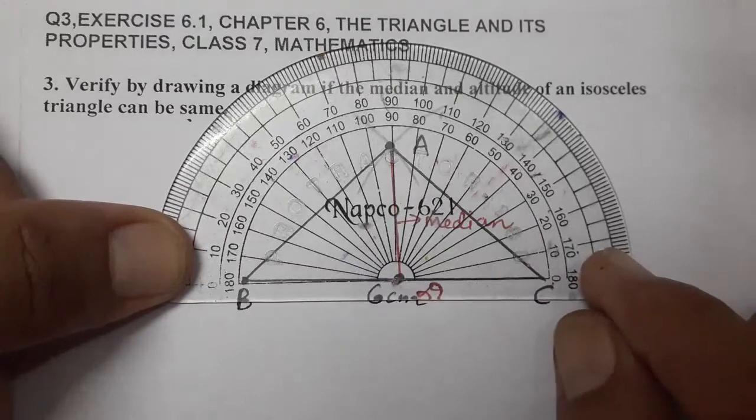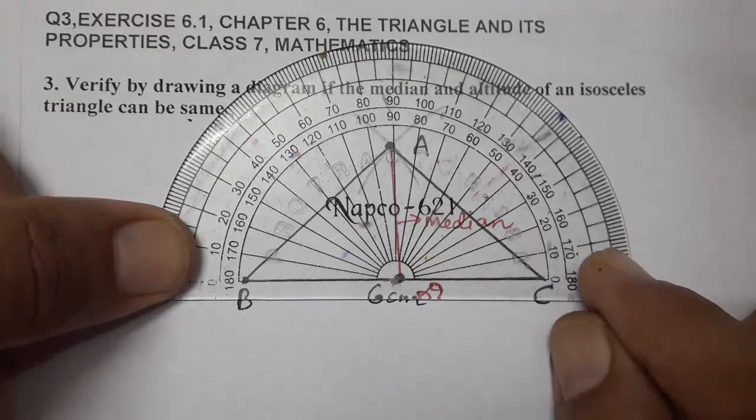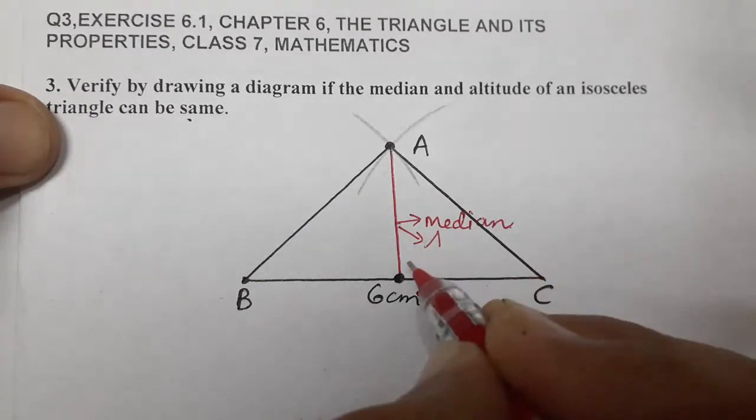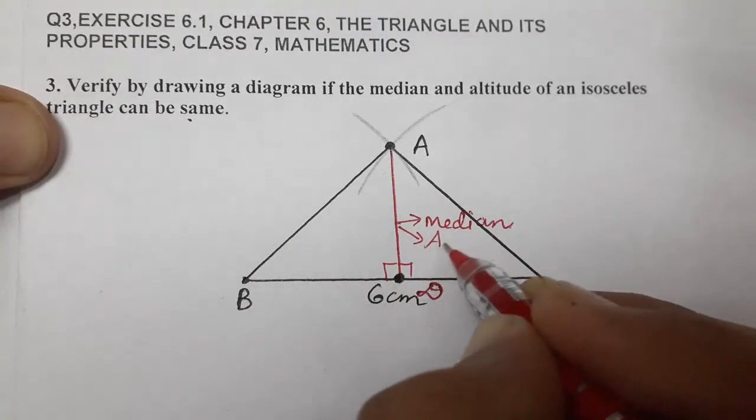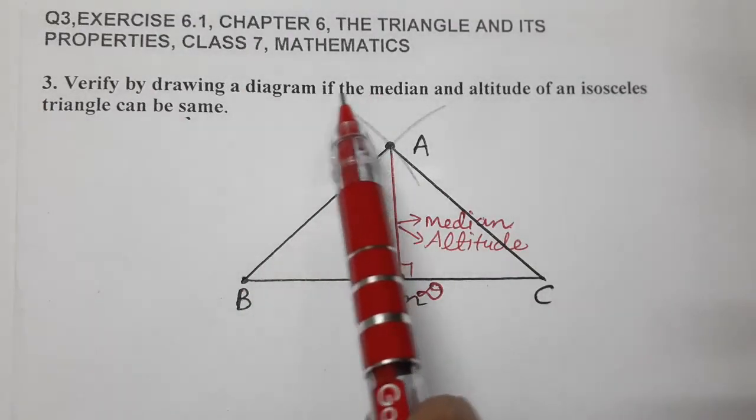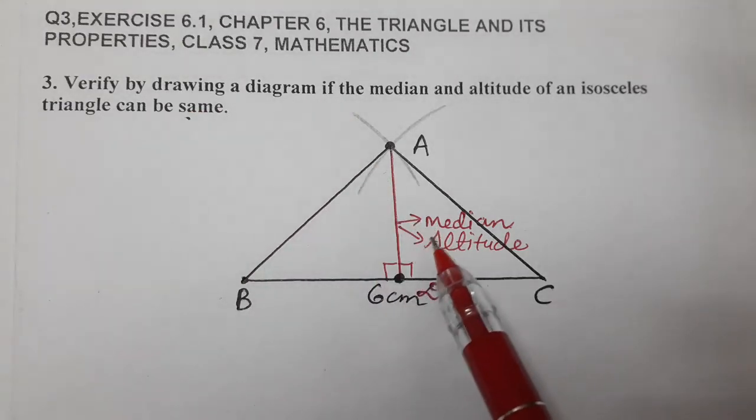This is 90 degree angle. This is also median and also altitude. It is making an angle of 90 degrees here. So we have verified by diagram that median and altitude are the same for isosceles triangles.